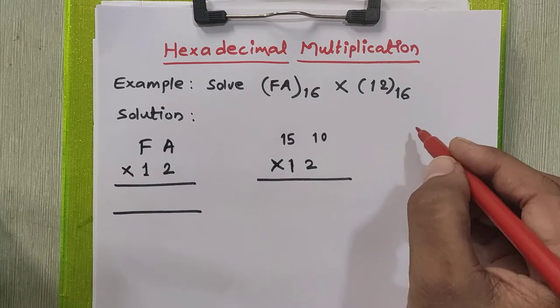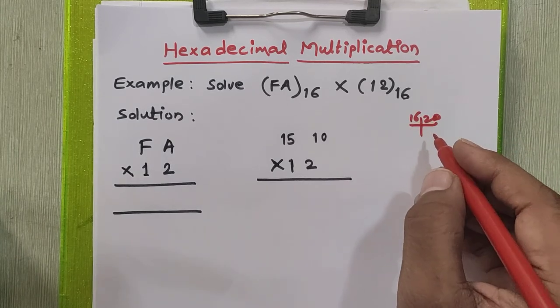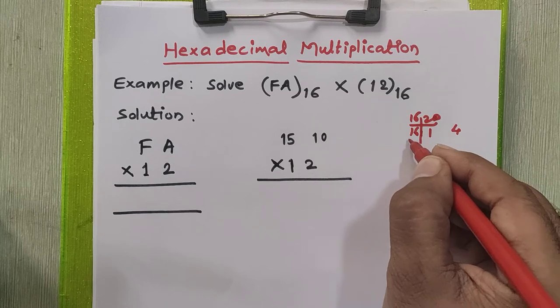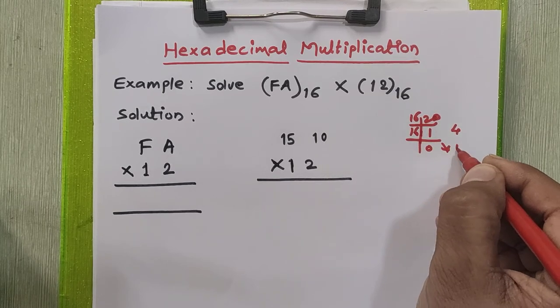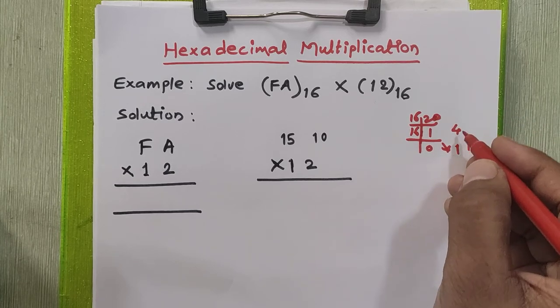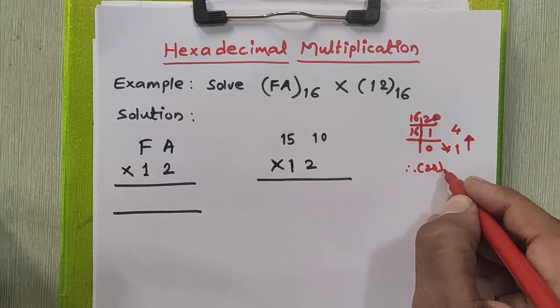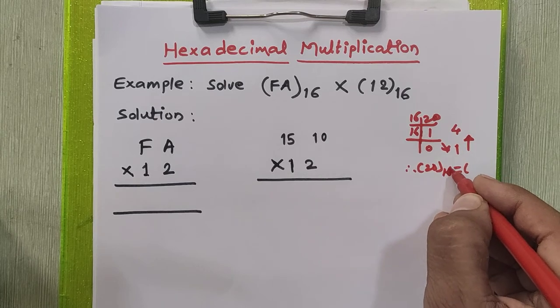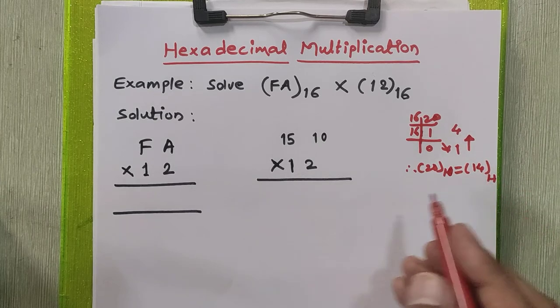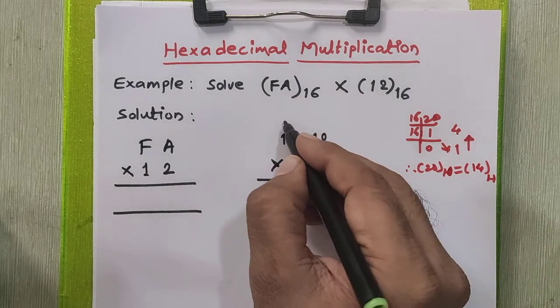To convert 20 into hexadecimal we'll follow this procedure. We'll divide the number 20 by 16 and then we'll get quotient as 1 and remainder as 4. When you divide this 1 you'll get quotient as 0, remainder 1 as it is. To get the exact hexadecimal equivalent we have to arrange these remainders from bottom to top. So 14 is the hexadecimal equivalent of 20. Therefore 20 in decimal is 14 in hexadecimal. Out of this 14, I will write 4 here and 1 will be given as carry to the next step.